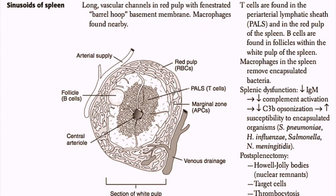Think about what would happen if you don't have your spleen — we see this in patients with sickle cell or in someone who has had their spleen surgically removed. Without this activation, they are more susceptible to encapsulated organisms. Other findings in people with splenectomies include Howell-Jolly bodies in the blood, which are nuclear remnants, target cells, and thrombocytosis.